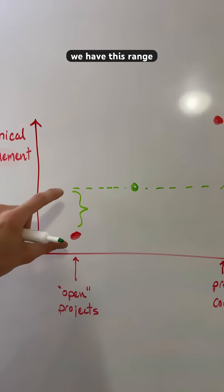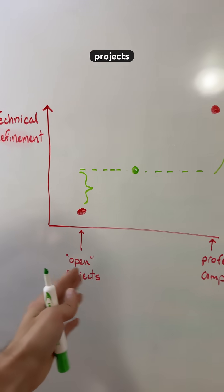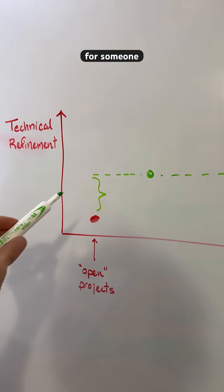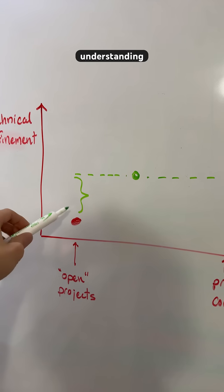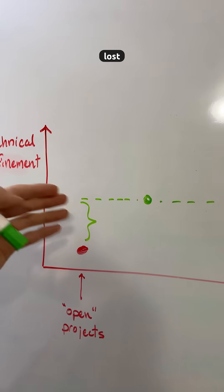Then we have this range where we have exceeded by some margin the typical open source projects that people talk about, and this is where it allows for someone outside of your expertise field to still have an understanding of the project. When you go above this line then they're going to start getting lost very quickly.